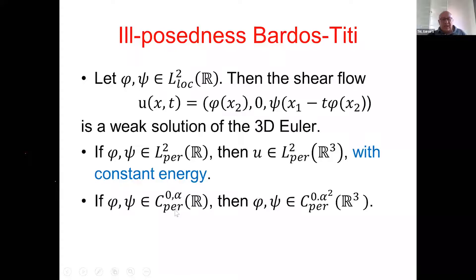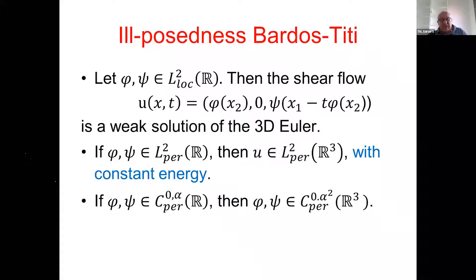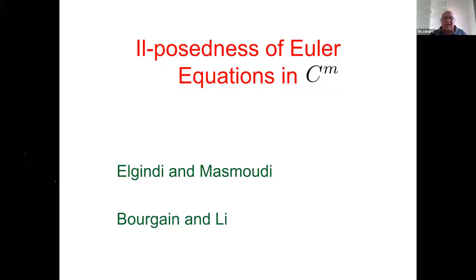Using the shear flow, Bardos and I showed that if you start initial data in C^{0,α}, at later time the solution belongs to C^{0,α²}, and since α² < α you immediately leave C^{0,α}. So Euler is ill-posed in C^{0,α}. While C^{1,α} is well-posed, C^{0,α} is ill-posed. This motivated work by Elgindi-Masmoudi and independently Bourgain-Li showing Euler is also ill-posed in C^m for integer m, because the Riesz transform is not bounded from C^m to C^m.